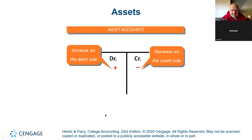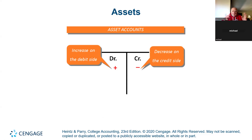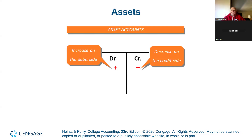Assets have what's called a normal debit balance. In other words, assets are increased with a debit. So when we're talking in the office and someone says, I don't see the debit to cash — debit, assets increase with a debit. That's rule number one.